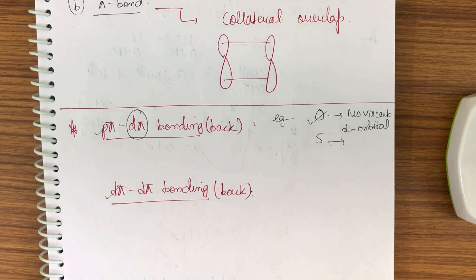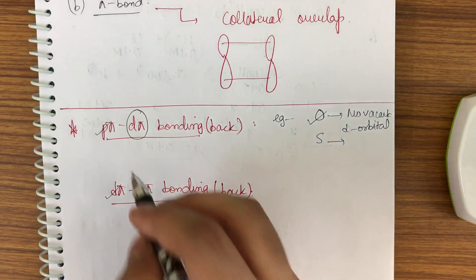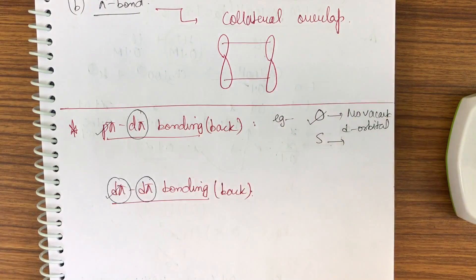ppi-dpi backbonding and dpi-dpi backbonding. For this, the element must have the d orbital as vacant orbital.